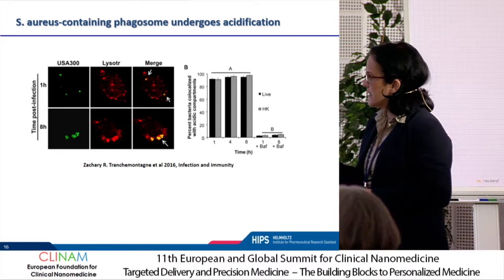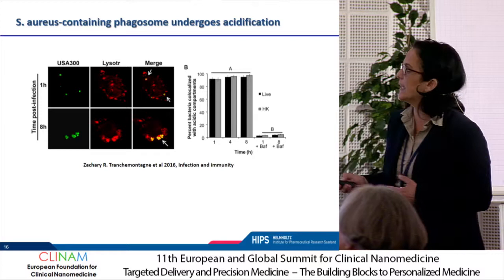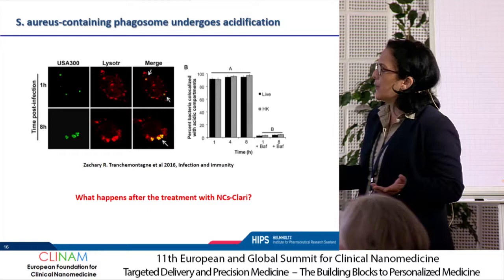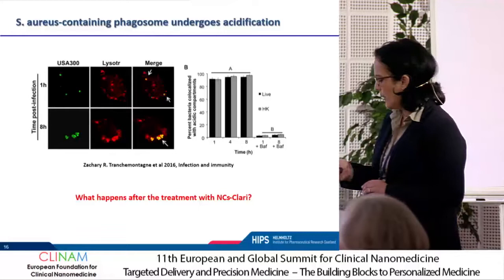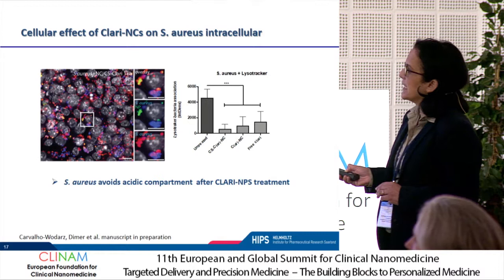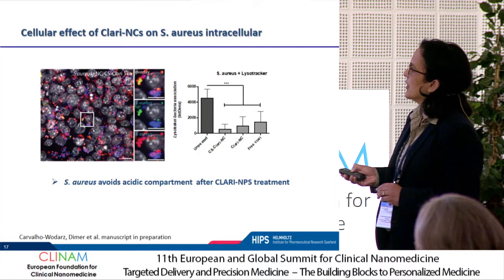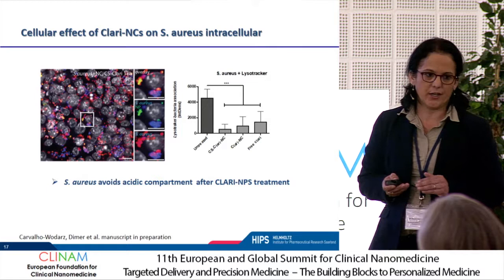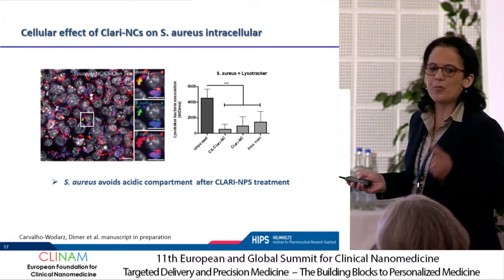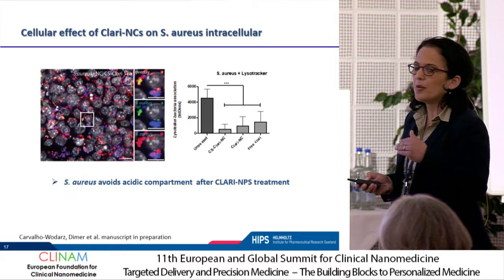It is already described that Staph proliferates inside the phagosome — not only in macrophages, but in dendritic cells as well. We then asked what happens after treatment with clarithromycin nanoparticles. Looking at lysosome staining, we can see that the treatment causes Staphylococcus to no longer interact with lysosomes — it decreases this association. Whether they are escaping to the cytosol I cannot tell yet, but something is disrupting the normal intracellular cycle that Staph follows.